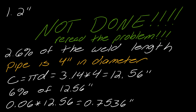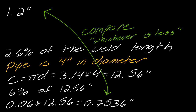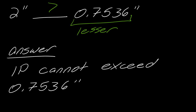We are not done — reread the problem. The whole point was 'whichever is less,' so now we compare the two values: two inches versus 0.7536 inches. Clearly 0.7536 is the lesser value. Choosing the lesser, the answer is: IP cannot exceed 0.7536 inches.